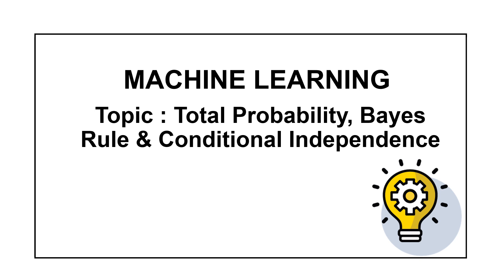Hello everyone. In our previous lecture we discussed some basic concepts of probability in machine learning. Now let us see about total probability, Bayes' rule, and conditional independence.